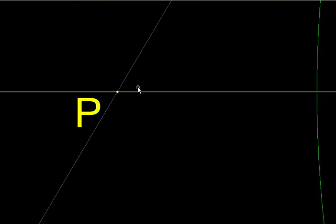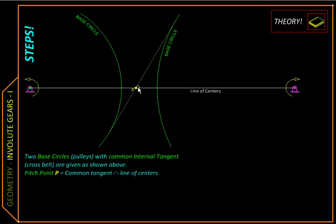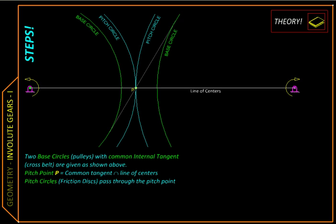Wherever this line intersects the belt we'll call that point P, and this point divides the space between the pulleys in a fair manner. We will call this point as the pitch point.